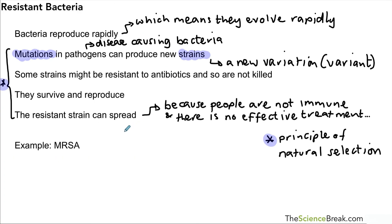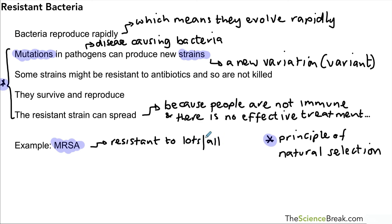One example of a resistant strain of bacteria is called Methicillin-resistant Staphylococcus aureus — we can reduce that to MRSA; you don't have to remember the whole name. This is quite a famous example because it was a strain of bacteria resistant to a whole bunch of different antibiotics, and it caused no end of problems especially in hospitals, where people were able to spread that disease because that's where people go when they're not well.